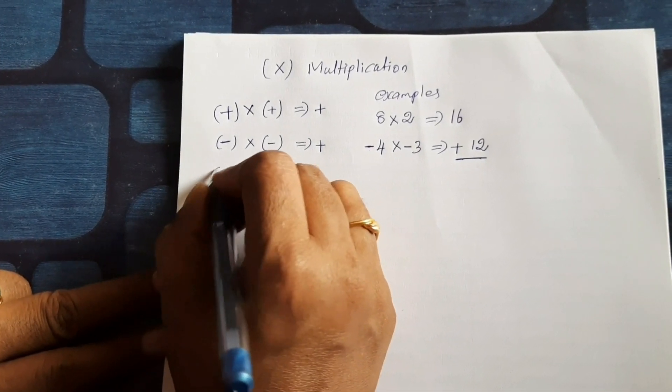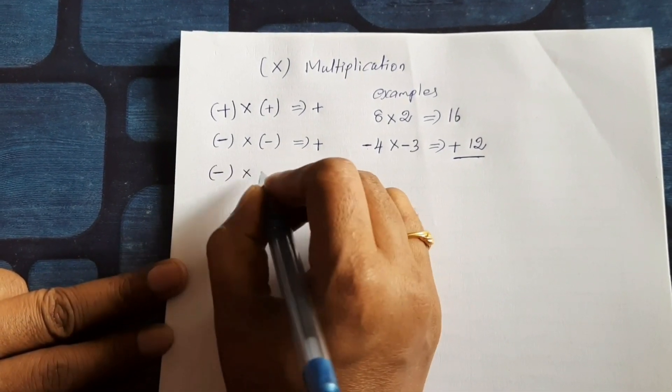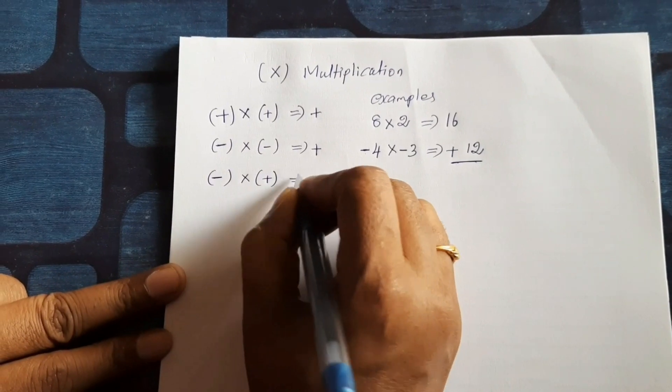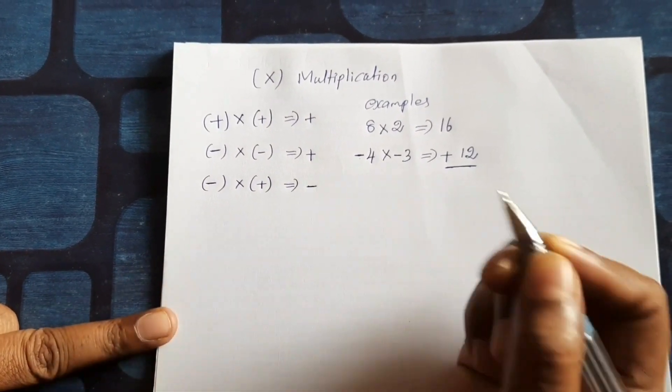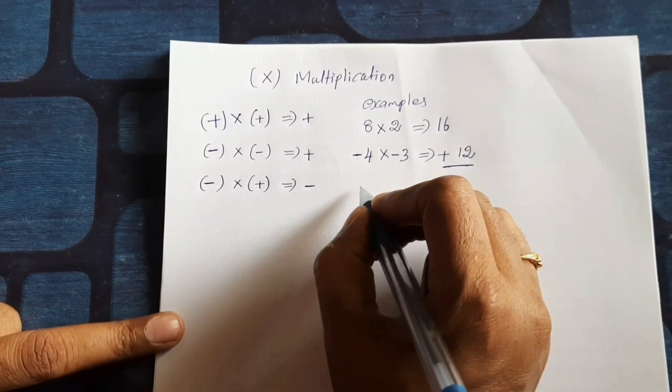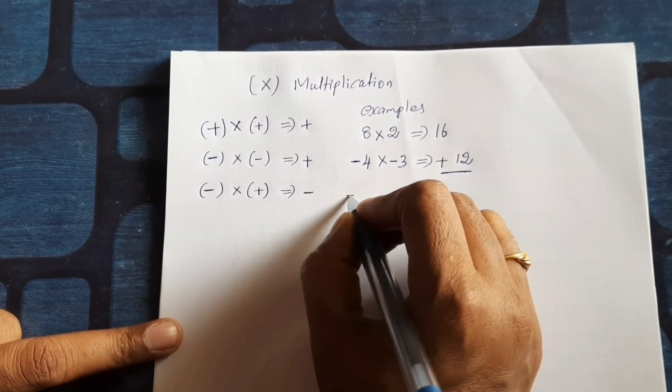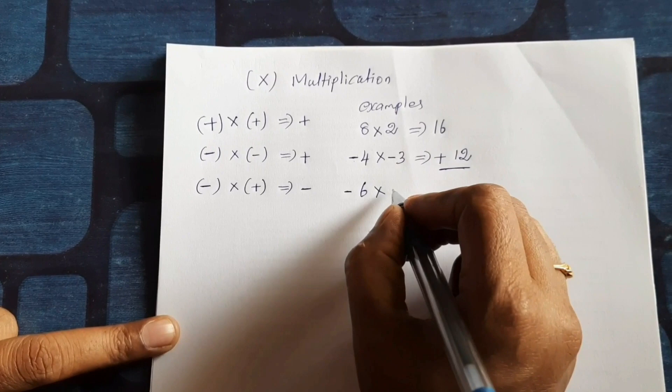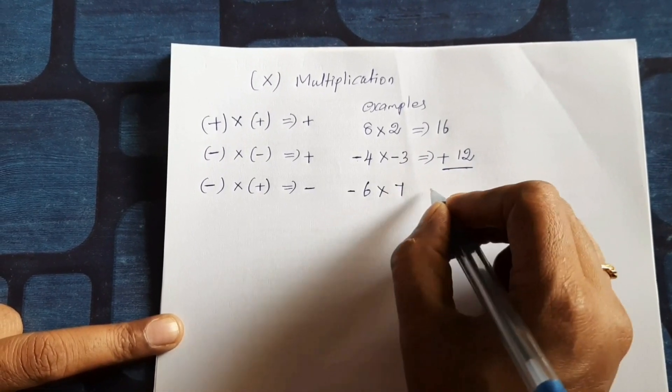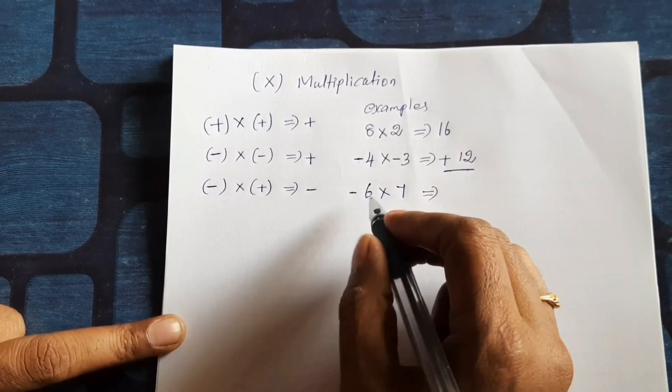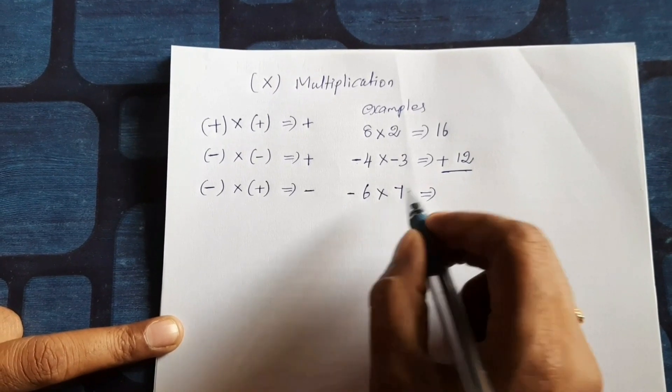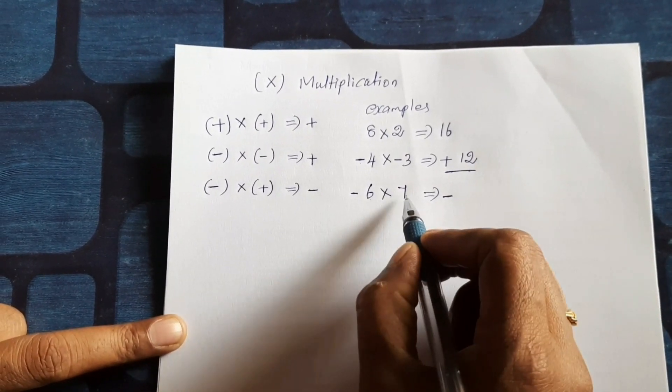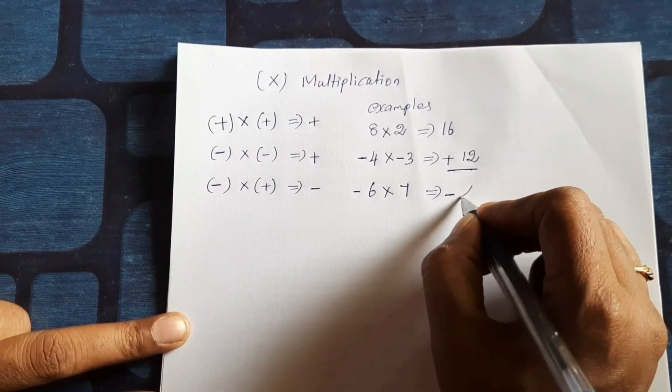Example: minus 6 into plus 7 equal to minus into plus minus, 6 into 7, 42.